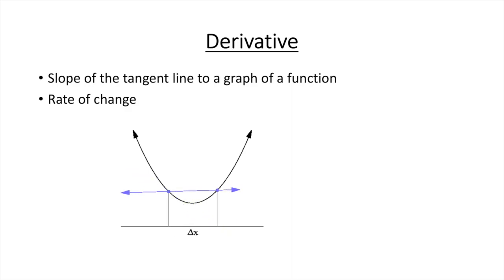This is nothing but the slope of the tangent line to a graph of a function, or it can be defined as a rate of change. If y is a function of x, then derivative of this function is a measure of the rate at which the function will change with respect to the change of input variable, i.e. x.